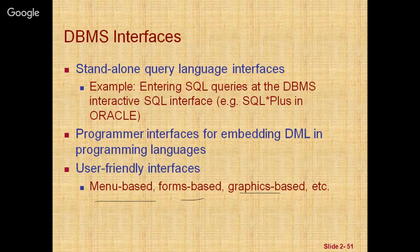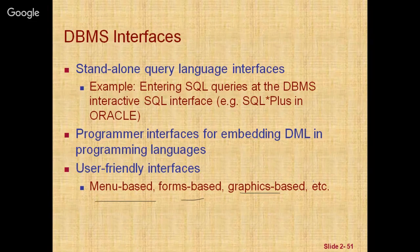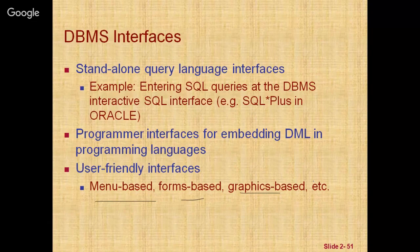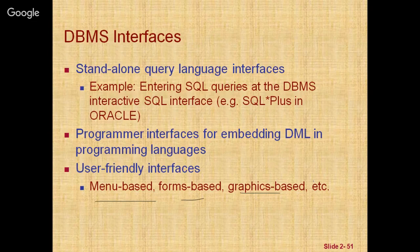Graphical user interfaces typically display a schema to the user in a diagrammatic form so that users can specify a query by manipulating the diagram. Natural language processing interfaces accept requests written in English or some other language and attempt to understand them. Speech input/output interfaces use speech as an input query and speech as an answer — for example, you can say 'Google, open my contacts' and it opens the contacts on your phone.